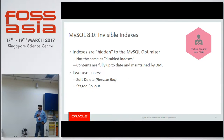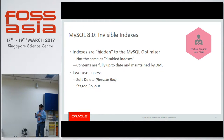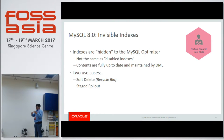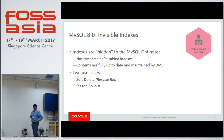Then there is something called invisible indexes. A lot of people say they don't want an index enabled by default — they want to look at it and then enable it. But building indexes takes such a long time that you don't want to immediately make the optimizer aware of it. So you create an invisible index — it's like a disabled index. You create the index, see if it is useful; if not, you drop it. Secondly, you can make an existing index invisible, and if nobody cries about it, then you can drop it. We call it soft delete and staged rollout.